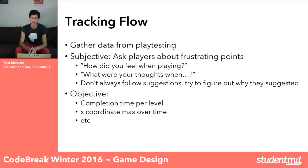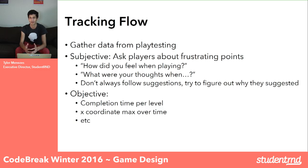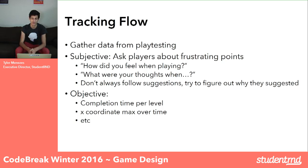When you're talking about playtesting, you're gathering data. Subjectively, you can ask players about frustrating points, but be careful about the questions you ask. Don't just ask 'was that frustrating?' — that won't give you as much useful data. Instead, ask more generic open-ended questions like 'how did you feel when playing?' or 'what were your thoughts when...' Don't always follow people's suggestions — people will have lots of suggestions and most will be wrong. Try to understand why they suggested it. More objectively, if you can collect data like completion time per level or number of deaths in a level, those are really useful. You could also track the x-coordinate maximum over time — are there certain points in the level where progress stays static for a really long time? Those are objective ways of figuring out where people are getting frustrated.